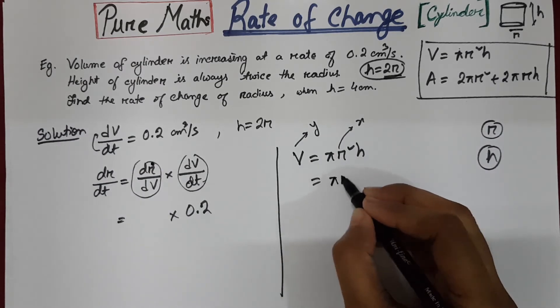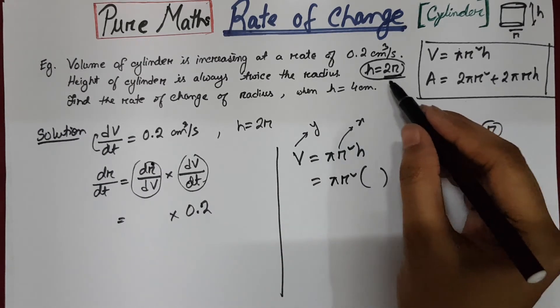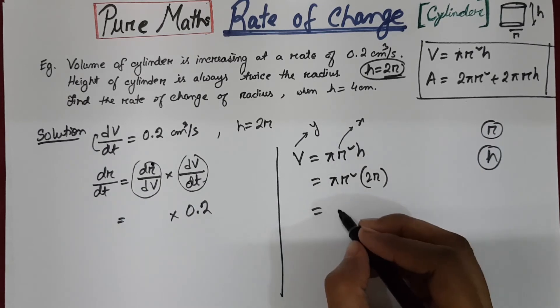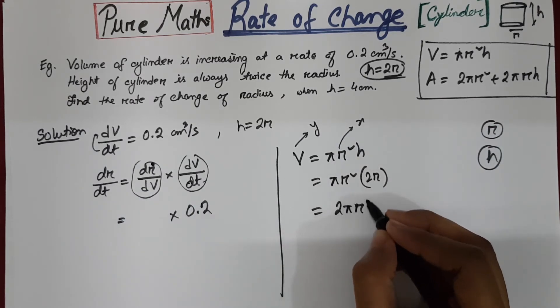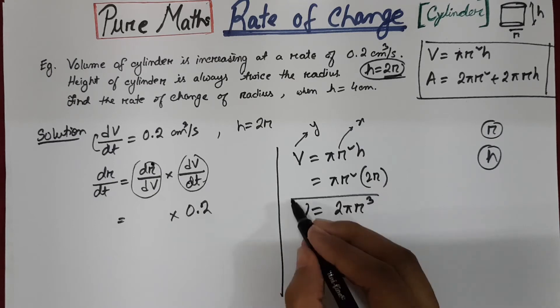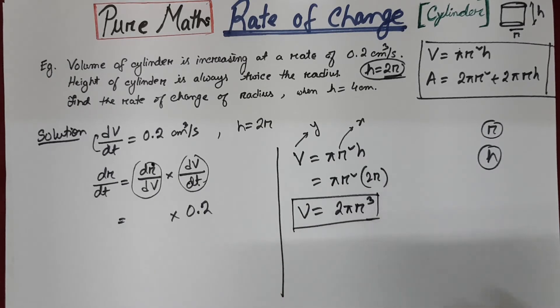So pi r square and I am replacing h with 2r. So the volume will become 2 pi r cube. So this is your new equation of volume which is in terms of radius only.